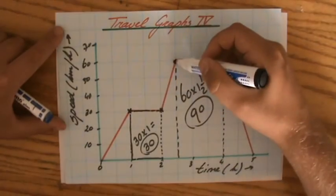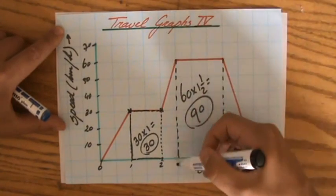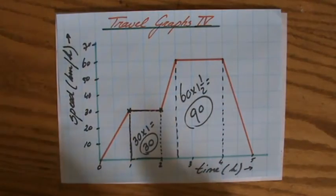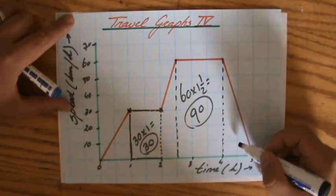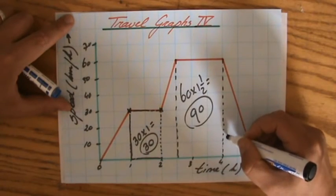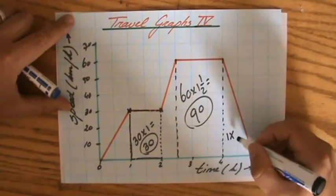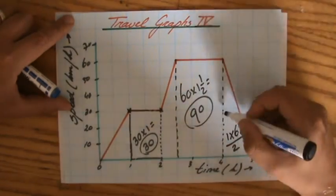And that is the area of this rectangle, 60 times one and a half. So as you can see, it is actually true. Let's have a look for this part. What is the area of this triangle? That is base times height divided by 2. So 1 times 60 divided by 2. So that is going to be 30. I'm just going to put a circle around it.